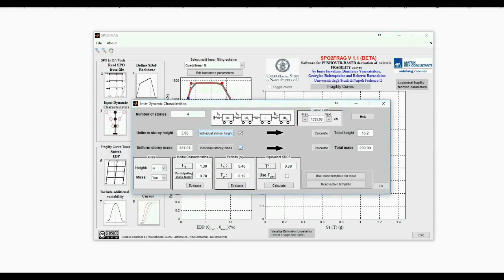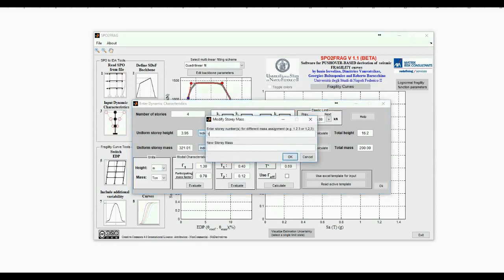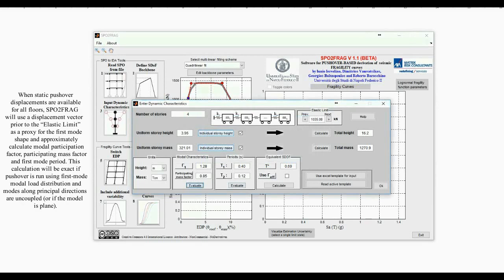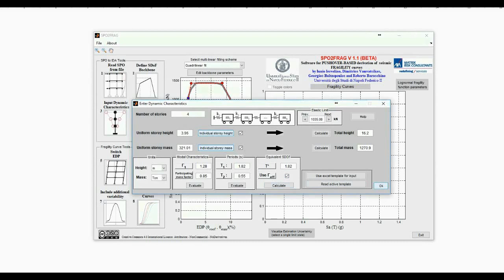We follow the same procedure for story masses, where the first and last stories have slightly different masses than the remaining. Now we click on the Evaluate buttons under the Model Characteristics and Periods panels. This option is available when pushover displacements at all stories have been provided to the program. For this case, we choose to also check the box labeled Use Gamma Effective because this is a flexible structure for which higher mode effects can have a significant contribution.